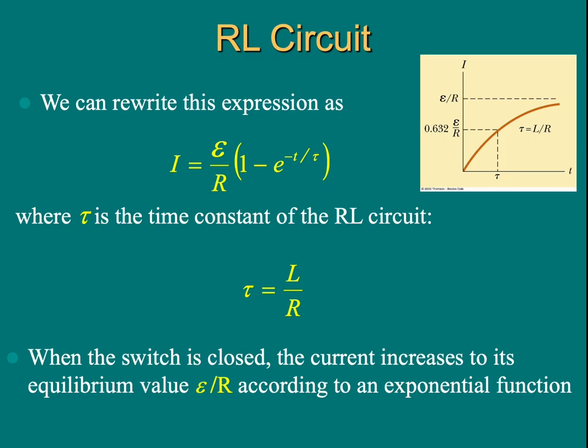We can do the same thing. We can define it to be exponential minus T over tau for RL circuit. Compare this equation to the previous equation, we find tau equals L over R. We call L over R the time constant for RL circuit.